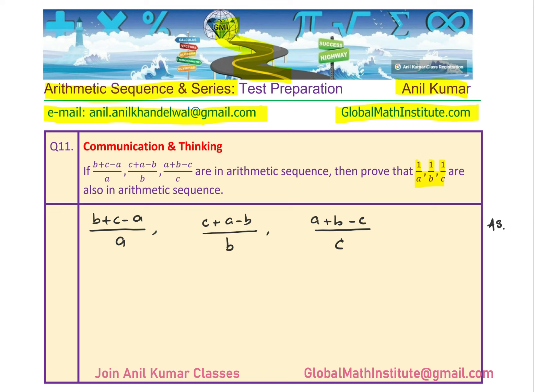Here is another very interesting strategy. Since they are in arithmetic sequence, adding or subtracting a number from each term should not make any difference. Notice the 'a' and '−a' — how about if I add 2 to each? If I add 2 to each term, then what do we get? Well, we get (b + c − a + 2a)/a as the first term.